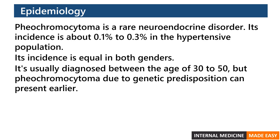Pheochromocytoma is a rare neuroendocrine disorder. Its incidence is about 0.1 to 0.3% in the hypertensive population, and it is equal in both genders. It is usually diagnosed between the ages of 30 to 50, but pheochromocytoma due to genetic predisposition can present earlier.